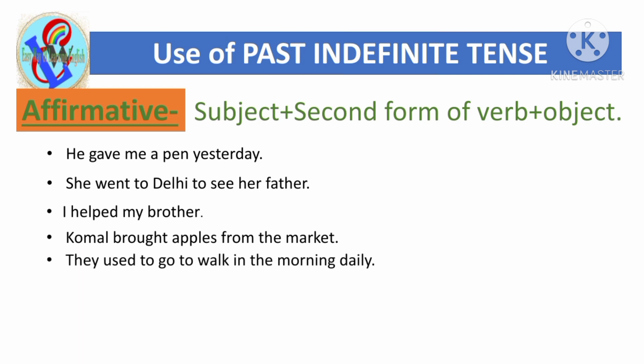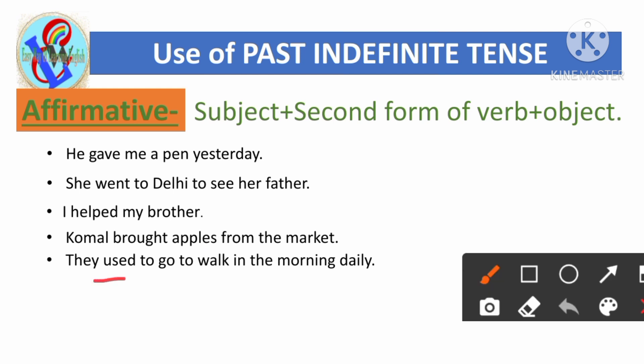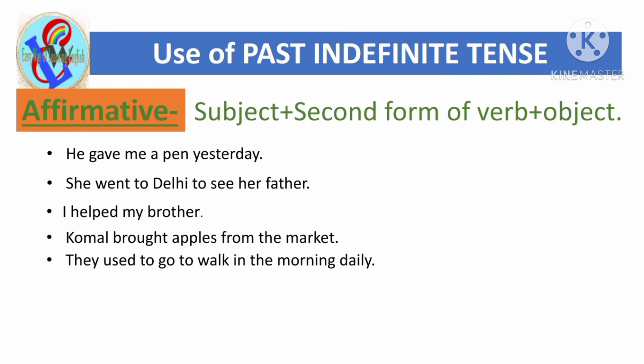'They used to go to walk in the morning daily.' Note the use of 'used to' here, because a past habit is being described — a habit that existed in the past but no longer exists in the present. That's why 'used to' is used with the first form 'go'.